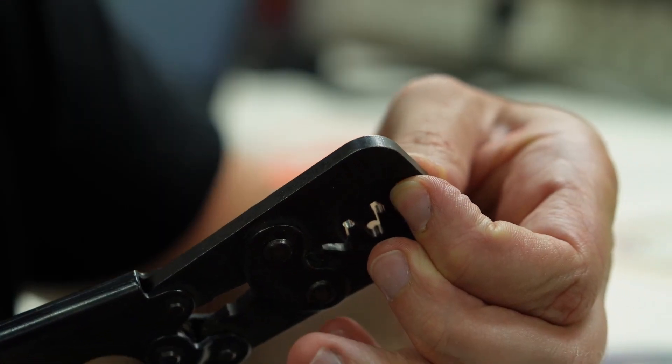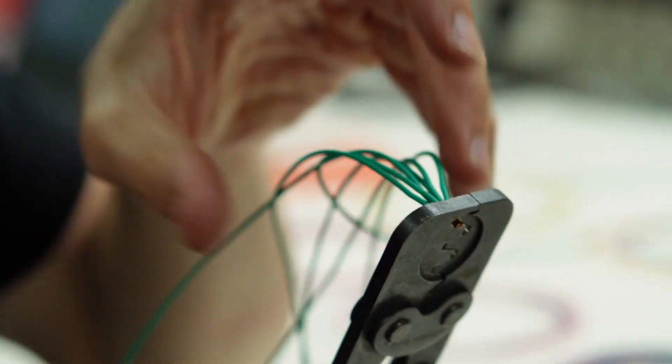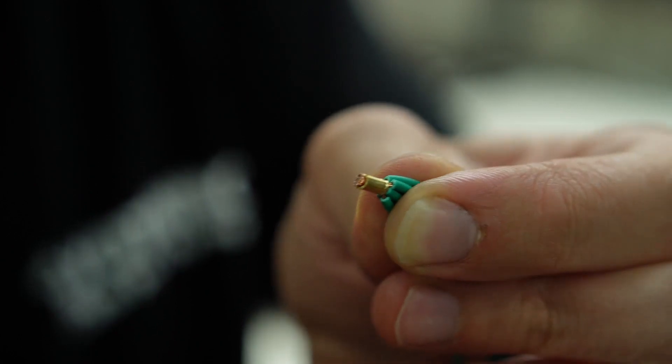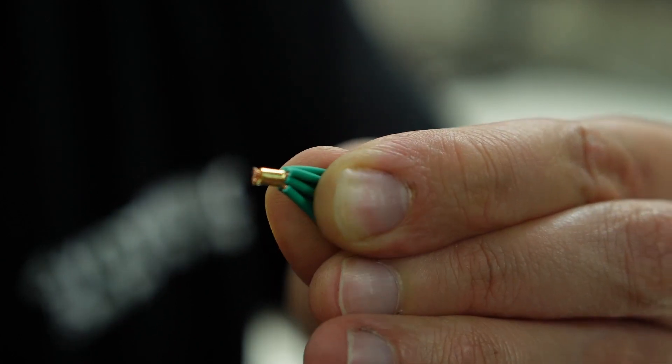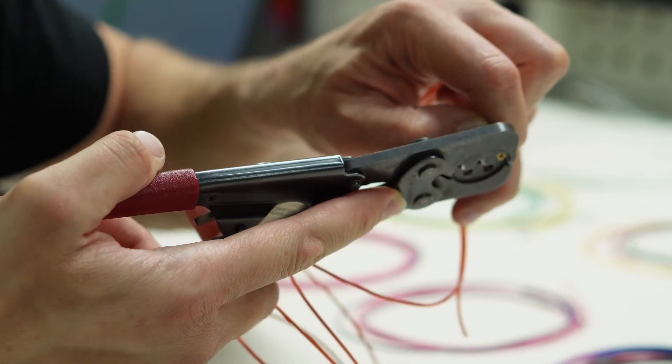We will be doing all the splices for the power grounds, sensor supplies etc at the connector instead of at different points down the harness. This will add more wire length to the harness and the main trunk will be slightly bulkier but less crimps overall which means less potential points of failure along the harness.